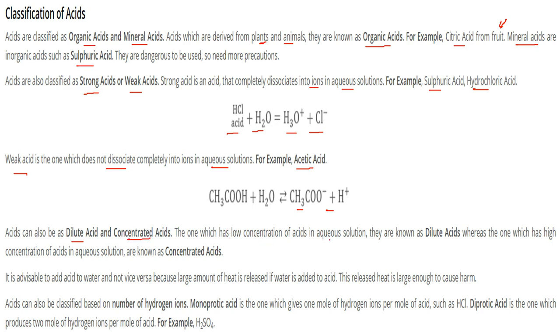If we have low concentration of acid in an aqueous solution we call them dilute acids, while if we have high concentration of that acid in aqueous solution we call it concentrated acid.